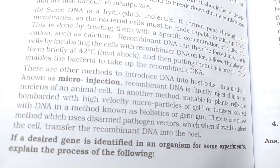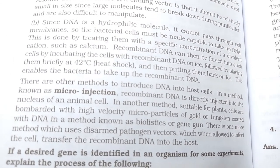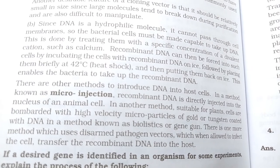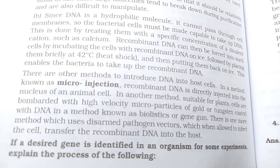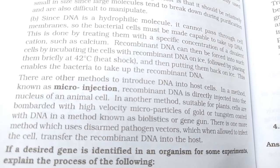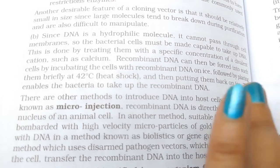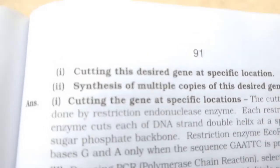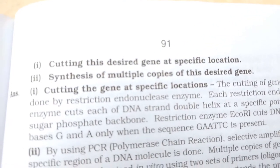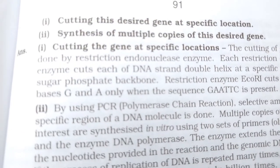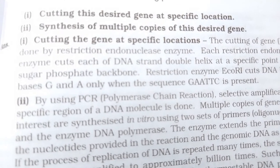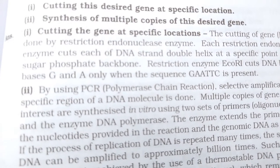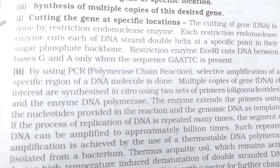If a desired gene is identified in an organism, explain the process of: cutting this desired gene at specific locations, and synthesis of multiple copies of this desired gene. The answer is shown.